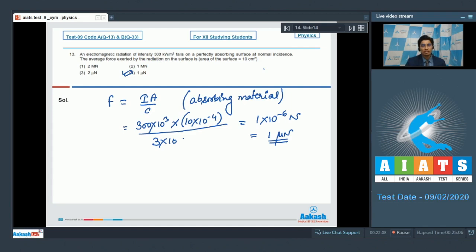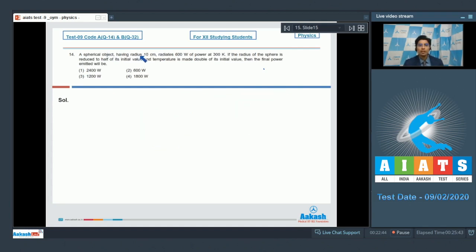Now let us solve question number 14. Question 14 says, a spherical object having radius 10 centimeter radiates 600 watt of power at 300 Kelvin. If the radius of the sphere is reduced to half of its initial value and the temperature is made double of its initial value, then the final power emitted will be: